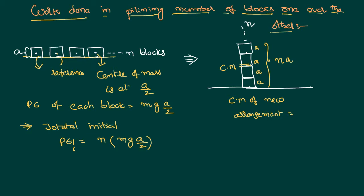New arrangement total height is N A. The center of mass is at the geometrical center, that is nothing but equal to N A by 2.